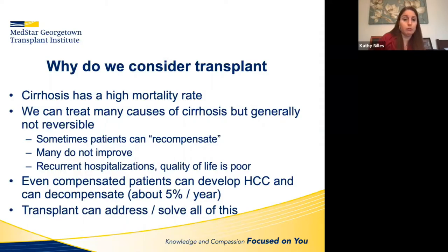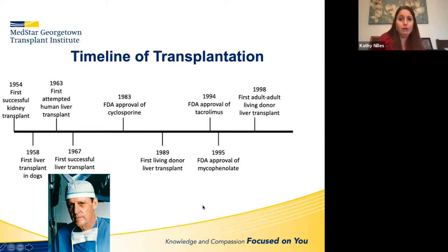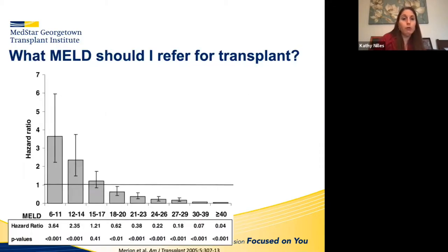A brief history of transplantation: 1954 first kidney transplant; first liver attempted in dogs in 1958 and in humans in Denver in 1963, but the recipient died. The first successful liver transplant was four years later. Cyclosporine was approved in 1983, significantly improving survival due to rejection. The first living donor was done in 1989; Prograf and mycophenolate were approved; and the first adult-to-adult living donor transplant was in 1998.